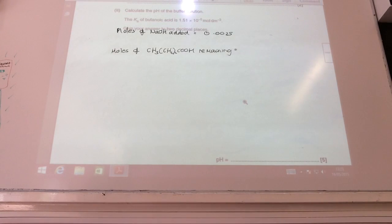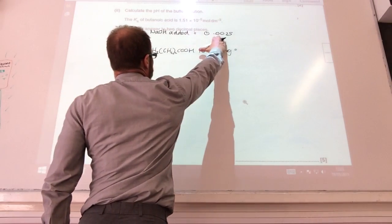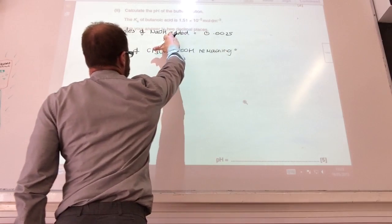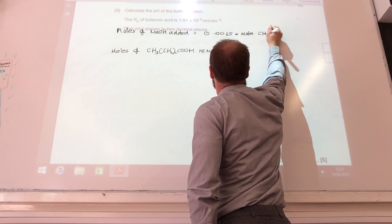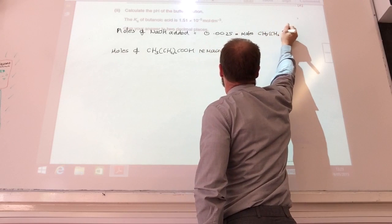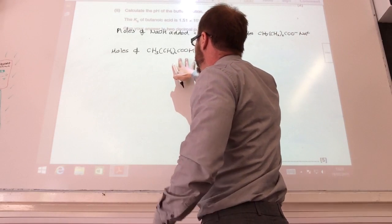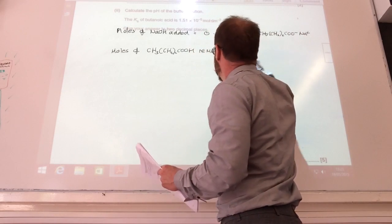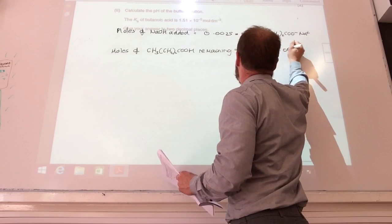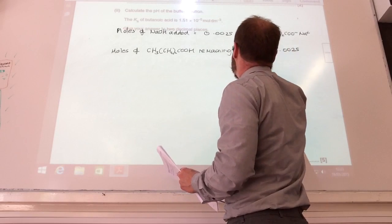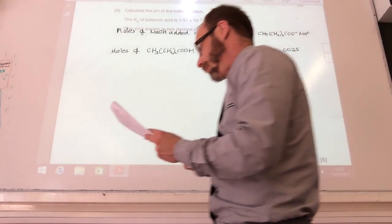Okay, so they now want me to work out the pH of this buffer solution. If we go back to the last question, we've worked out we've added 0.0025 moles of sodium hydroxide. Therefore, that is equal to the moles of sodium butanoate that I must have formed. There. So how many moles of butanoic acid have I got? Well, I've added 0.0125 moles. I've used, in reacting with the sodium hydroxide, 0.0025. So I've actually got left 0.01 moles.